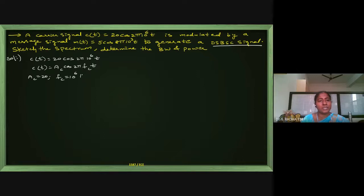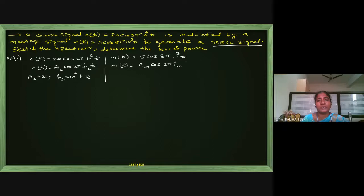The message signal m(t) = 5cos(8π×10³t). Comparing with the standard format Am·cos(2π·fm·t), we get Am = 5. To find fm, we equate the angular frequency: 2π·fm = 8π×10³, giving fm = 4×10³ Hz, which is the message frequency.